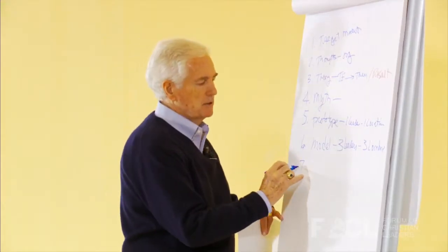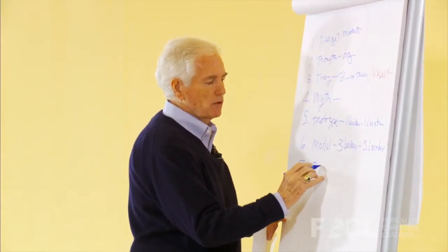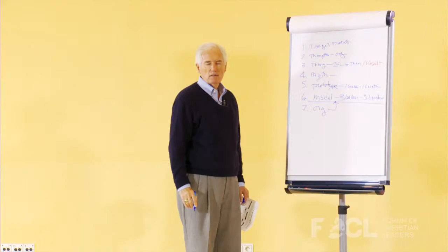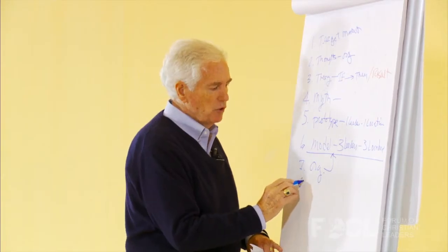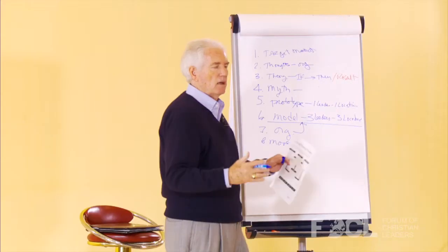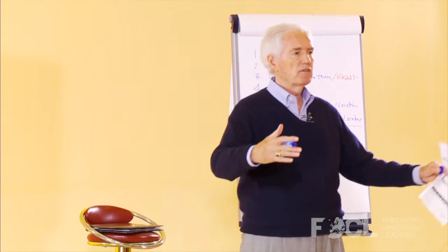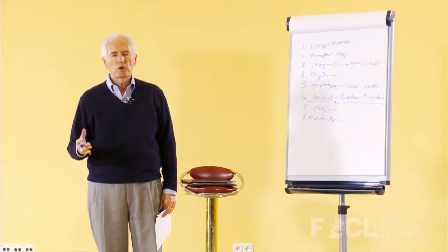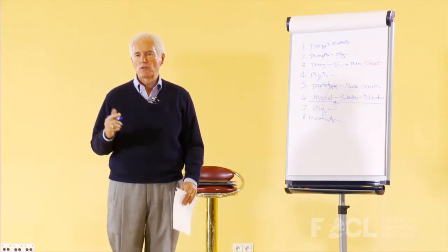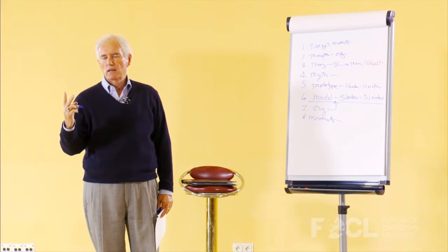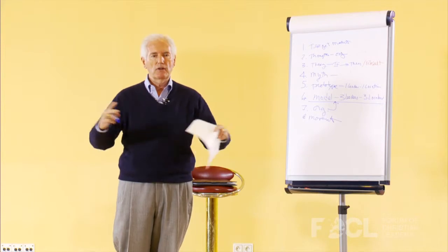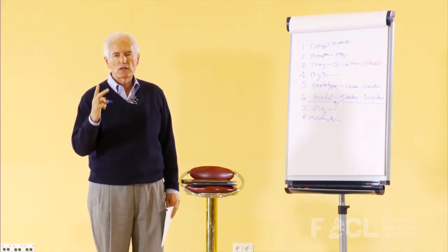Then number seven is organization. What kind of an organization do we need to support the model we're building? And then number eight is movement. A movement is something that's growing faster than we have ability to control. I asked Bill Bright one day, what is the key to controlling a movement? He said two things, your literature and your training. Control your literature and control your training.